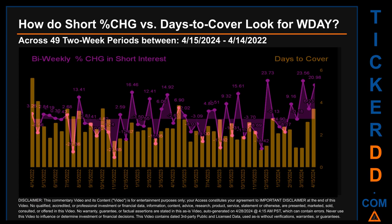Zooming out, I looked across 49 two-week snapshots from the latest found April 15, 2024, to the oldest found April 14, 2022. In the graph, I overlaid bi-weekly percentage change in short interest against days to cover. Across these 49 snapshots, the average percentage change of short interest was about minus 0.53%. The largest percentage increase was 23.73%, and the largest decrease was minus 23.85%, occurring once on November 15, 2022 settlement date. The average days to cover was about 2.48, the biggest was 5.53, occurring once on April 14, 2022 settlement date.